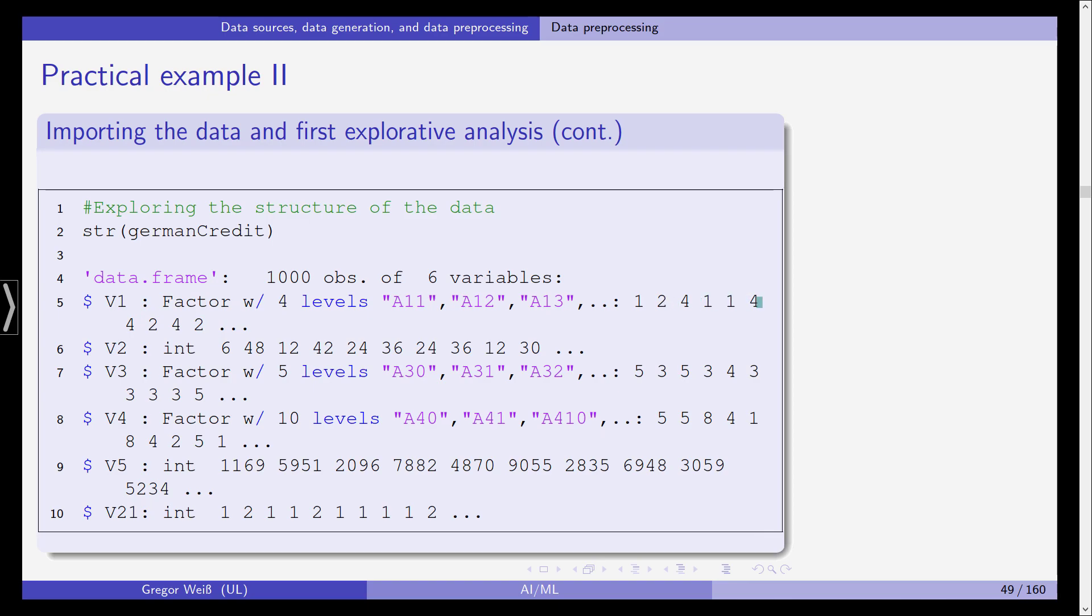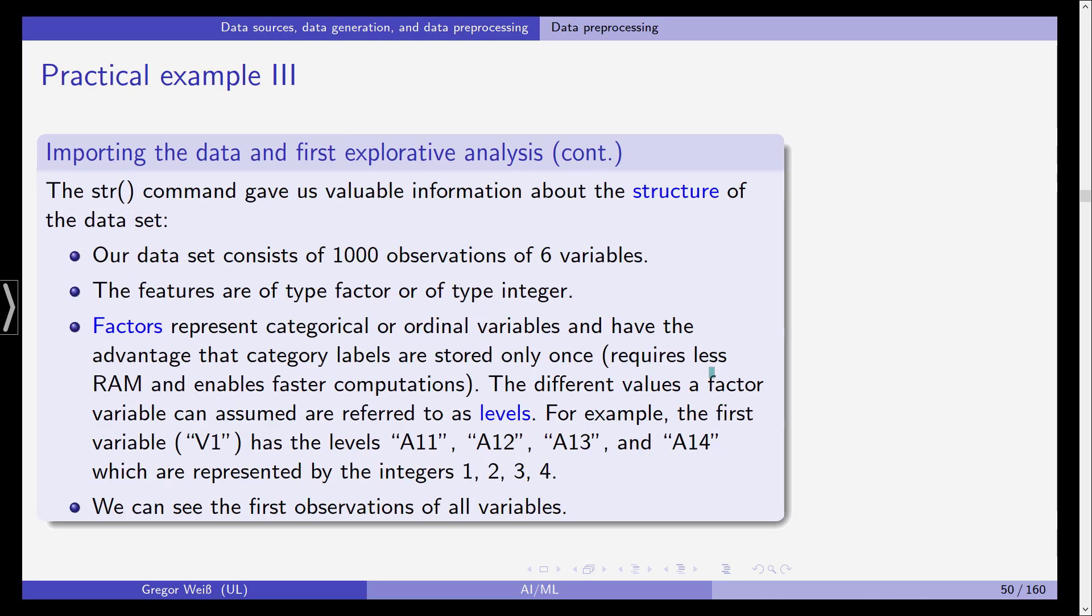For this first variable V1, it has the levels A11, A12, A13 and A14. We can already see the first observations: 1, 2, 4, 1, 1, 4. Those are the values of the first variable for the first 10 rows or observations.